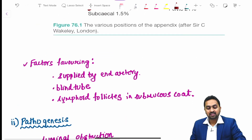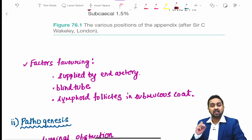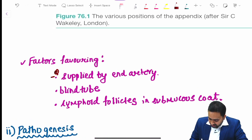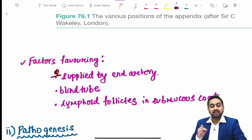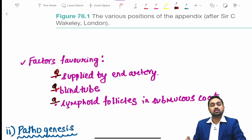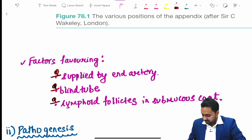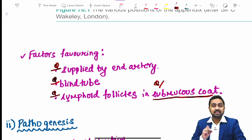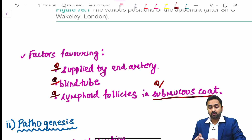The various factors favoring acute appendicitis include that it is supplied by an end artery, it is a blind tube, and it has lymphoid follicles in its submucous coat. So the lymphoid follicles in the appendix are present in the submucous coat.